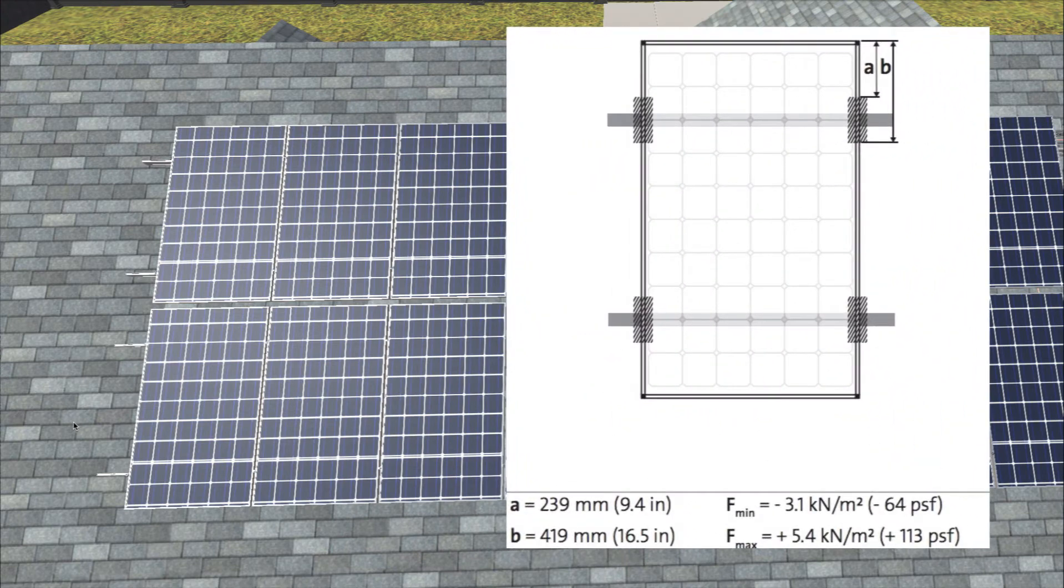Here's the particular configuration that we're talking about, mounting a module on two rails. And they give the locations where they want to allow that kind of support to be. They give dimensions A and B. And now below they show that that dimension A is about 9.4 inches and B is about 16 and a half inches.